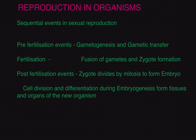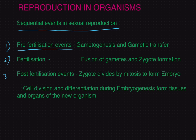Let us see the sequential events taking place in sexual mode of reproduction. Number one: pre-fertilization events. Number two: fertilization. And number three: post-fertilization events. All these events are placed before fertilization, at fertilization, and after fertilization.